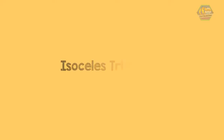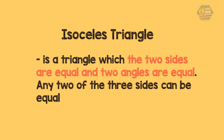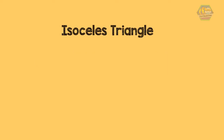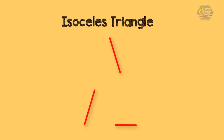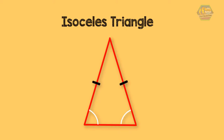The other type of triangle is the isosceles triangle. An isosceles triangle is a triangle in which 2 sides are equal and 2 angles are equal. Any 2 of the 3 sides can be equal. The 2 small lines indicate that the 2 sides are equal.